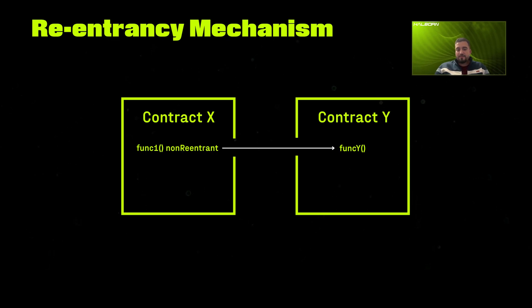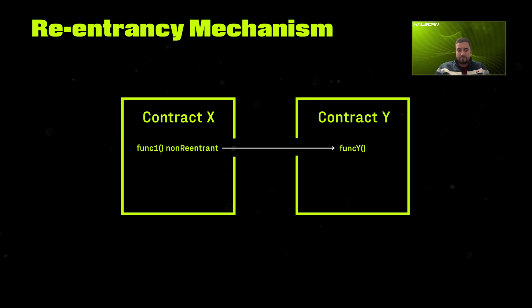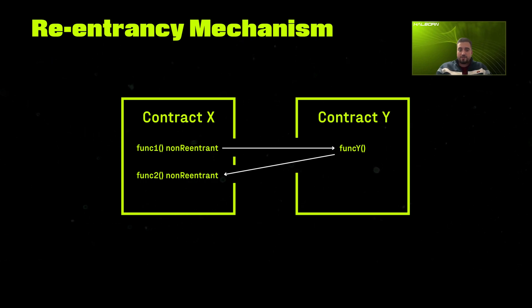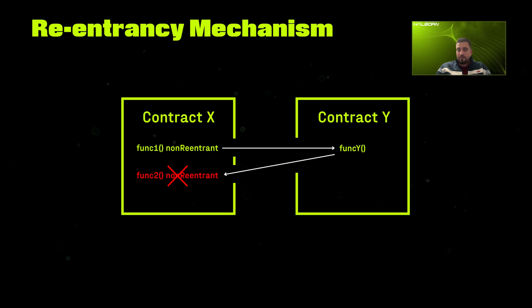This callee function needed to get some data stored in the first contract, so it is doing a callback. But the function being called during this flow also implemented a non-reentrant modifier. And as the protection against reentrancy was activated before, this modifier will block a proper callback, resulting in broken functionality and denial of service.